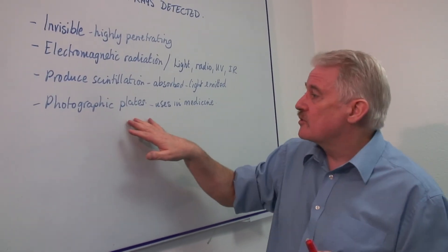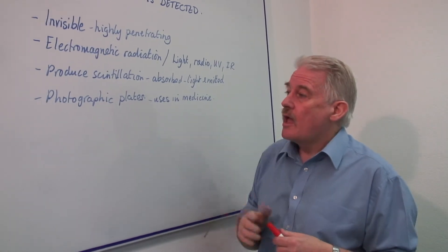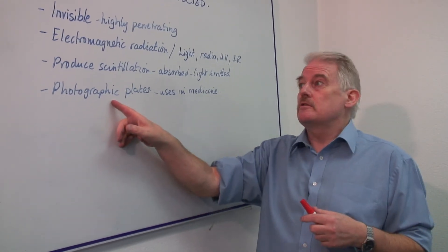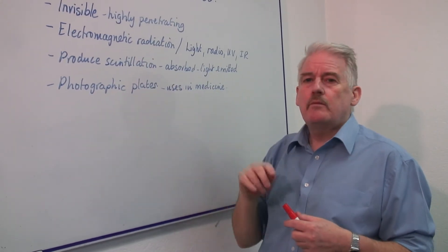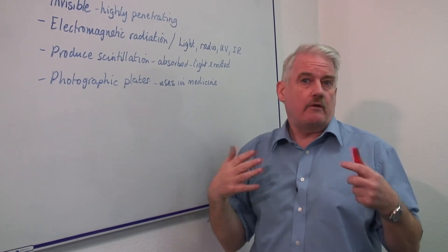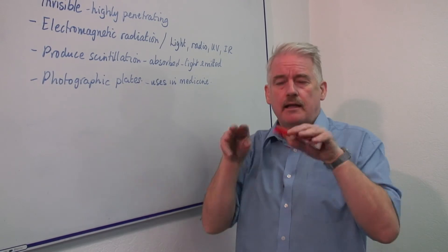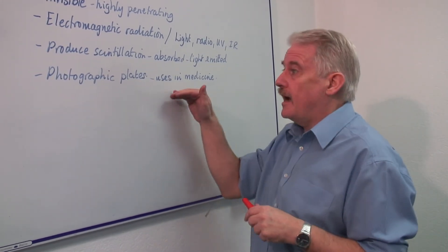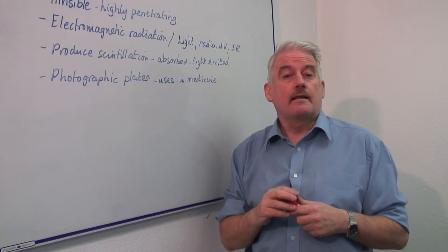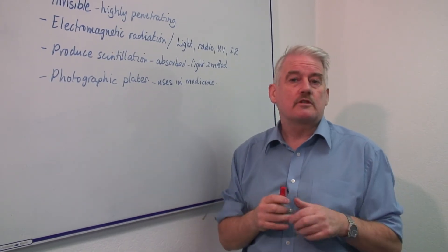So photographic plates were used to detect them. And now can be used to detect x-rays when we create an image of the body, for example, with focused x-rays played through the body. And the photographic plate actually creates the image that we want to see.